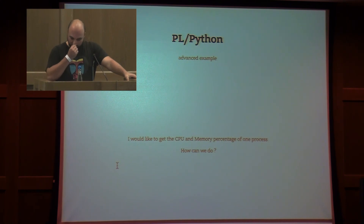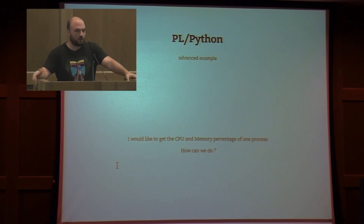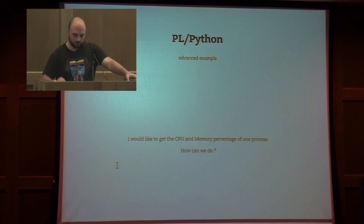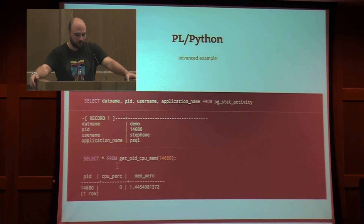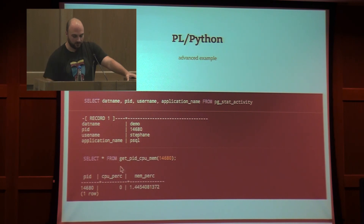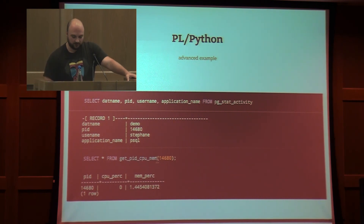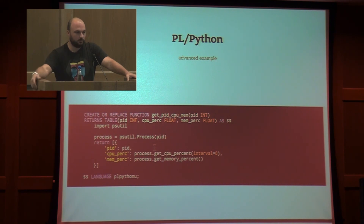A small advanced example: how can I know the CPU and memory percentage of a process from Postgres? I can find my process using the pg_stat_activity table, and use a function called get_pid_cpu_mem. This function is defined using PSUtil — a Python library — and I can interact with the operating system. Just import PSUtil, use psutil.Process, and read the data.